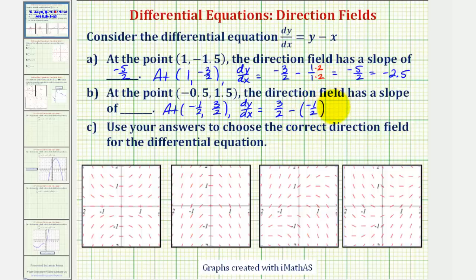Which becomes plus 1/2, so 3/2 plus 1/2 would be 4/2, or positive 2. So at this second point, the direction field has a slope of positive 2.